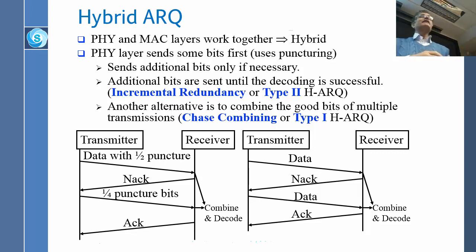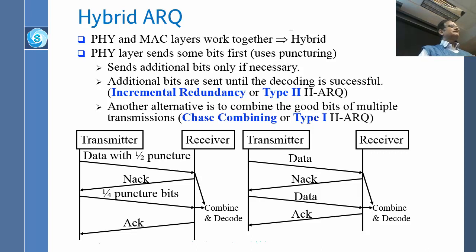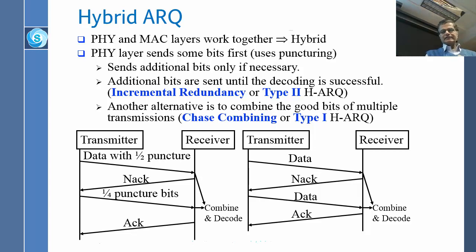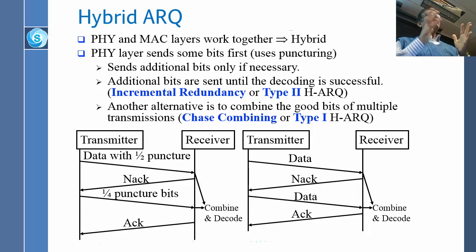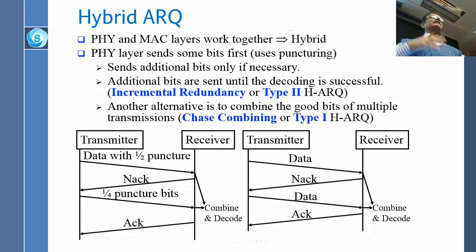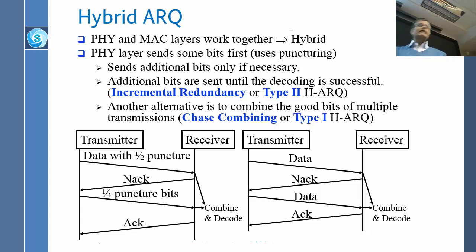So that is why it is called hybrid HARQ. Type 2 would be better and more efficient. Type 1 is less efficient, but both are allowed. When writing the standard, some people said this one and others said that one, so both are allowed. I don't know which one is really implemented, but both are allowed.